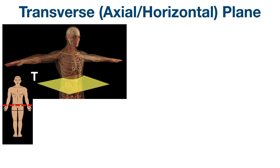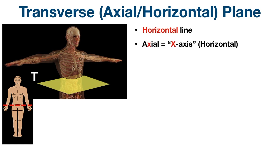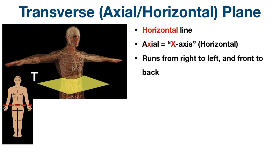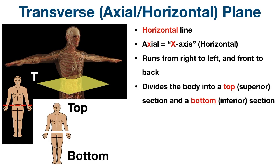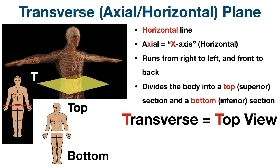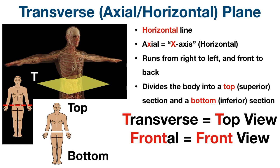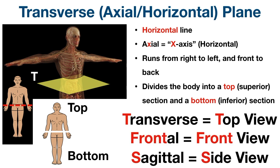Finally, we have the transverse plane — the T in our abbreviation SCT. The transverse plane is also called the axial plane or horizontal plane, which makes sense because it is a horizontal line. You can remember the X in 'axial' to help you recall that the transverse plane runs along the X axis, the horizontal axis. The transverse plane runs from right to left and front to back, dividing the body into a top section and a bottom section — giving you a top view of the body.